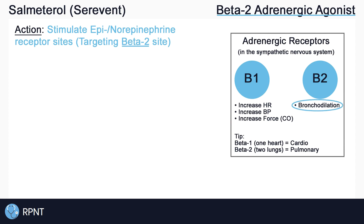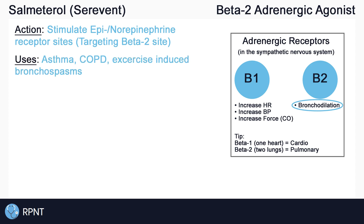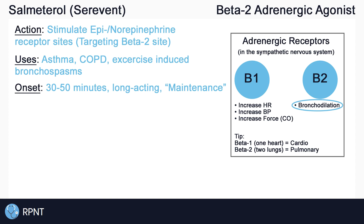Salmeterol is a long-acting bronchodilator used for the management and treatment of asthma and chronic obstructive pulmonary disease, or COPD. Salmeterol should not be used for the relief of acute asthma attacks as its onset of action is relatively slow at approximately 30–50 minutes. Due to the slow onset and longer duration, salmeterol can be classified as a maintenance or controller inhaler.